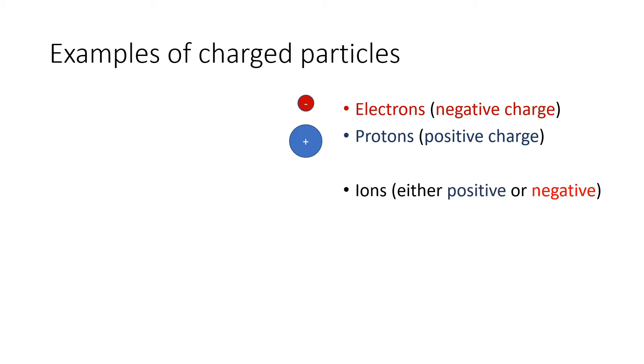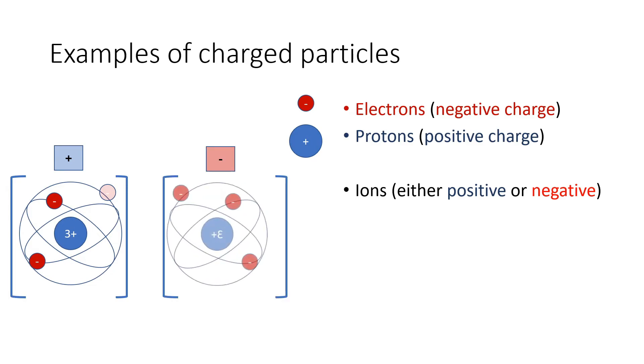And charged atoms, which are known as ions. These can be either positive, with a neutral atom missing an electron, or negative, with an atom gaining an extra electron.